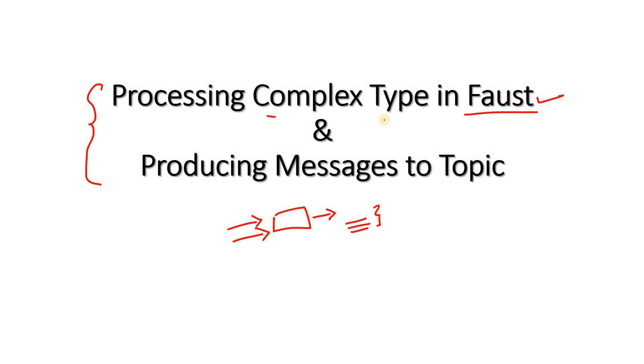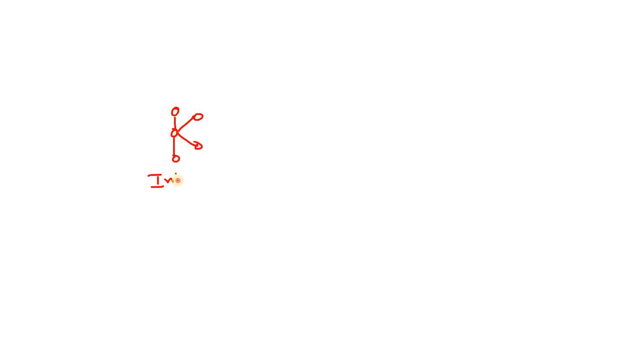Today we are going to discuss complex types in Faust and how to produce messages to a particular topic using Faust. Let us try to understand why we need that first, and then we will switch to the lab section. Suppose here we are having our Kafka topic — this is basically our input topic.